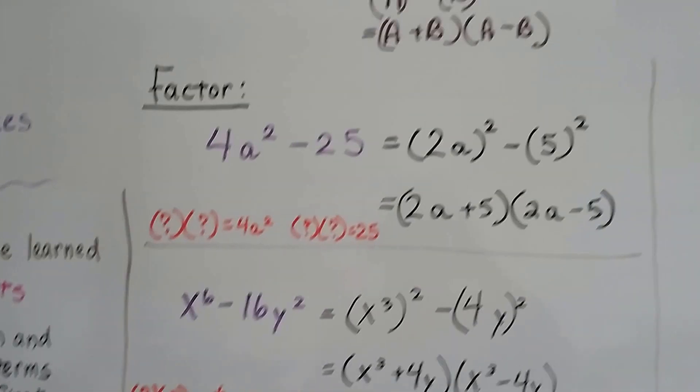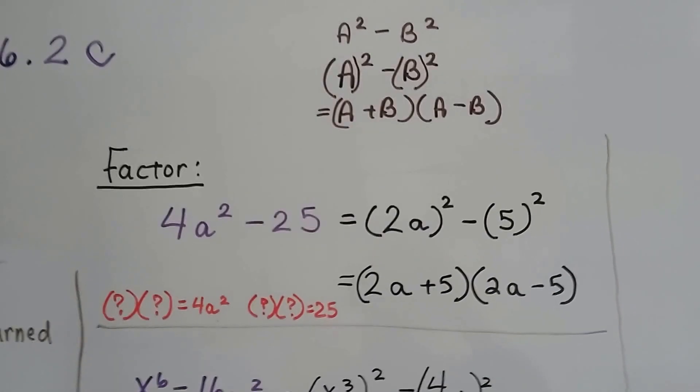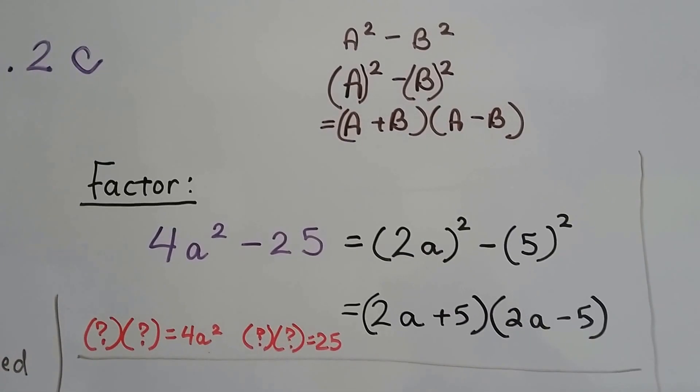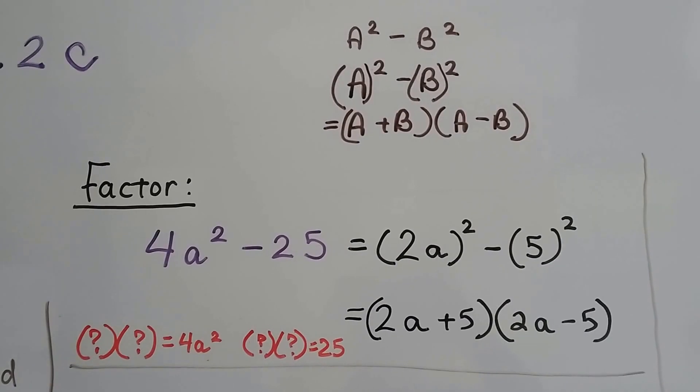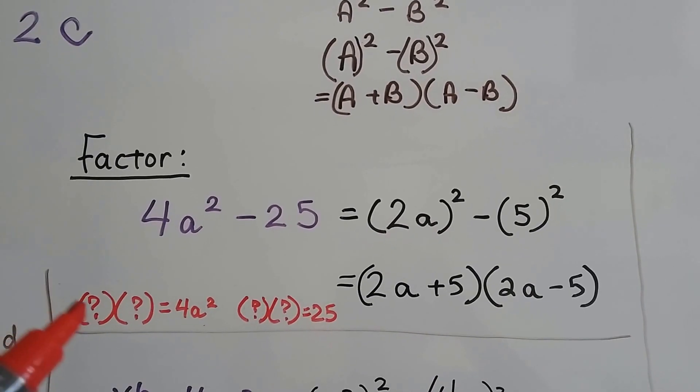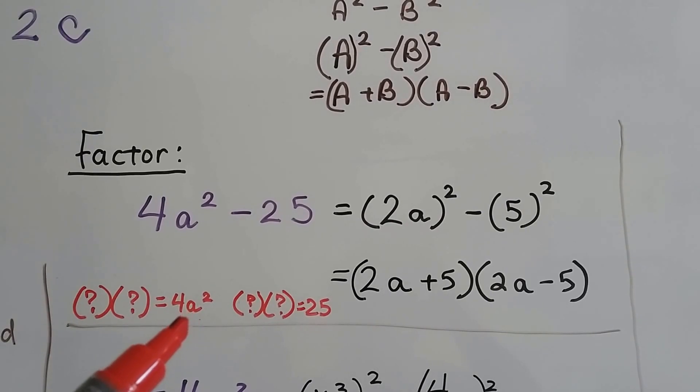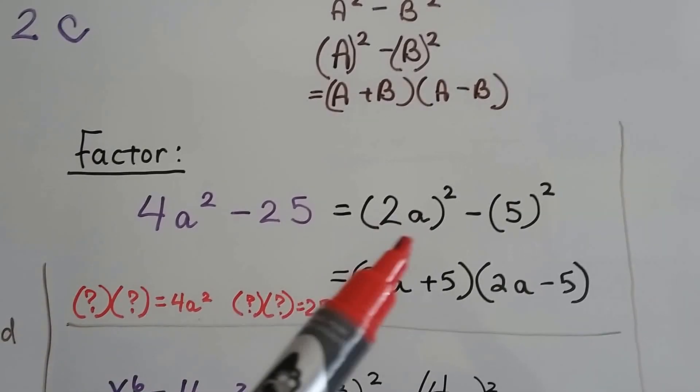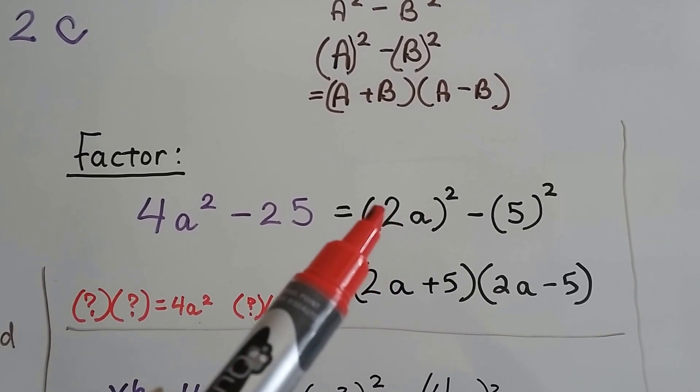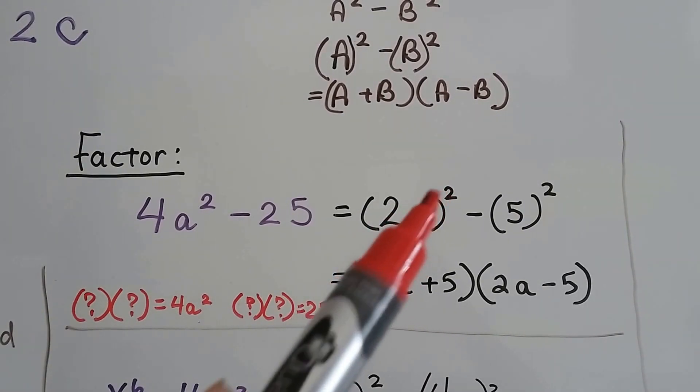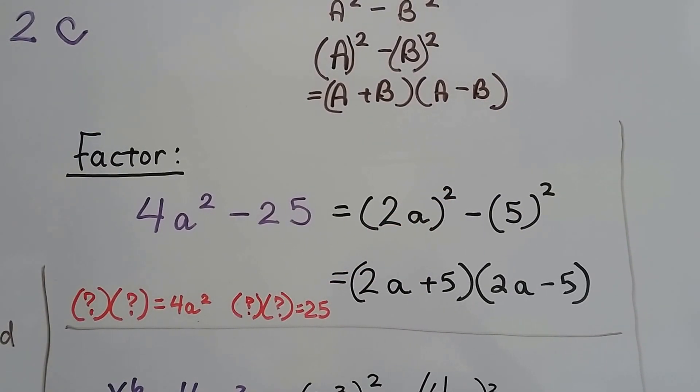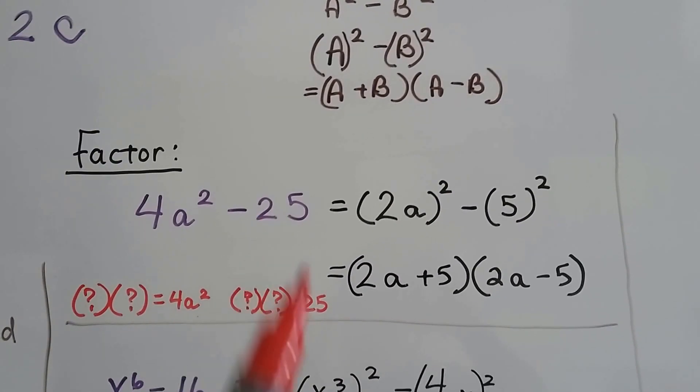So if we use this, we can factor. 4a² minus 25, we ask ourselves, what times what equals 4a²? 2a times 2a. So we can write it as (2a)² and what times what is 25? 5.